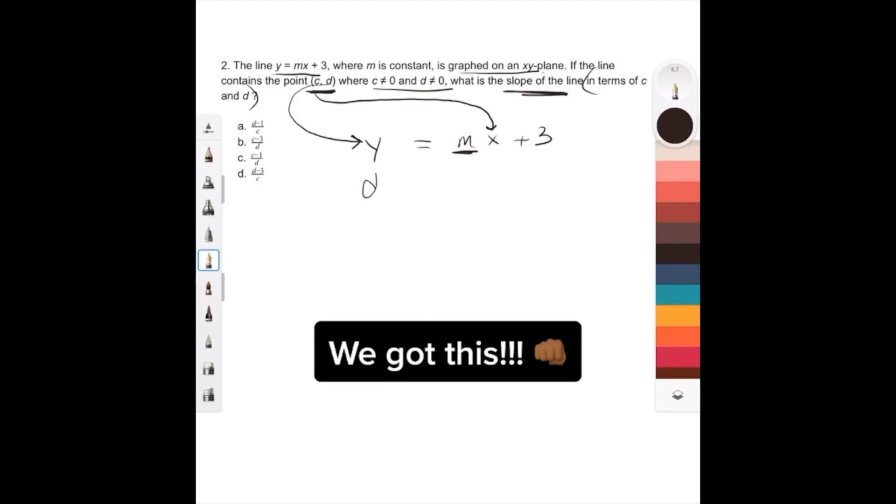So we can literally just replace it and say d equals m times c plus 3, and we need to solve for the slope which is just m. We're going to subtract 3 from both sides. We get mc equals d minus 3.